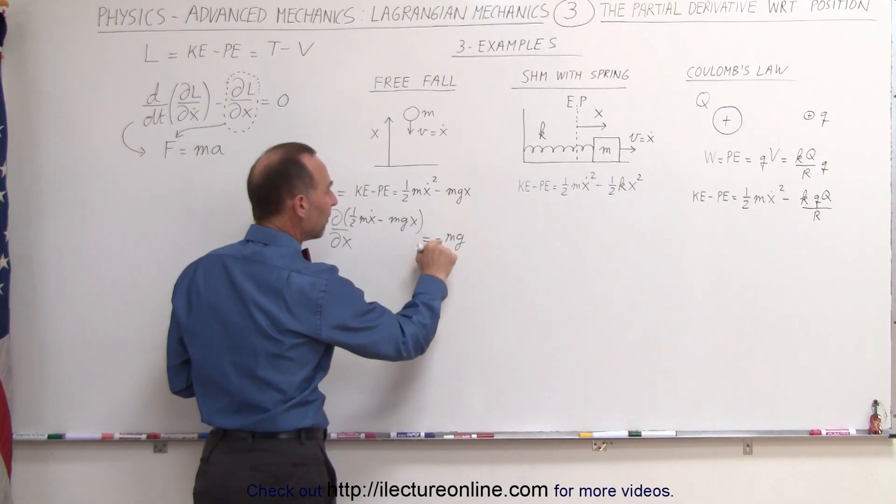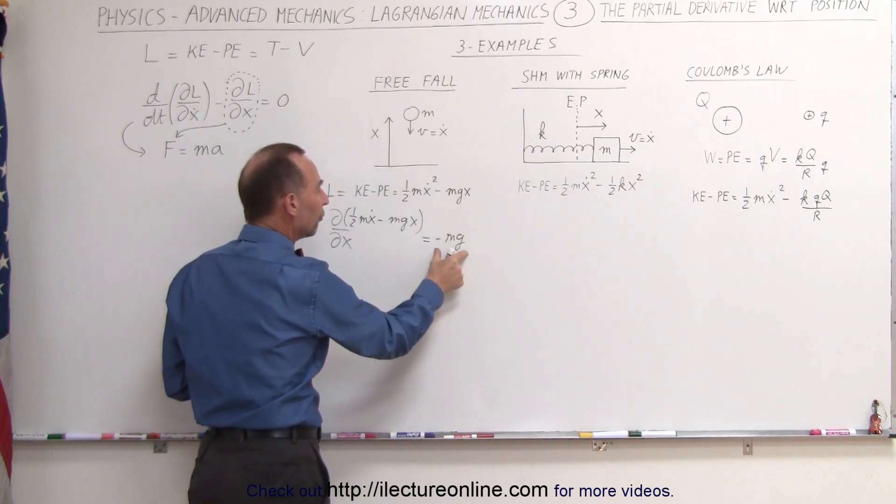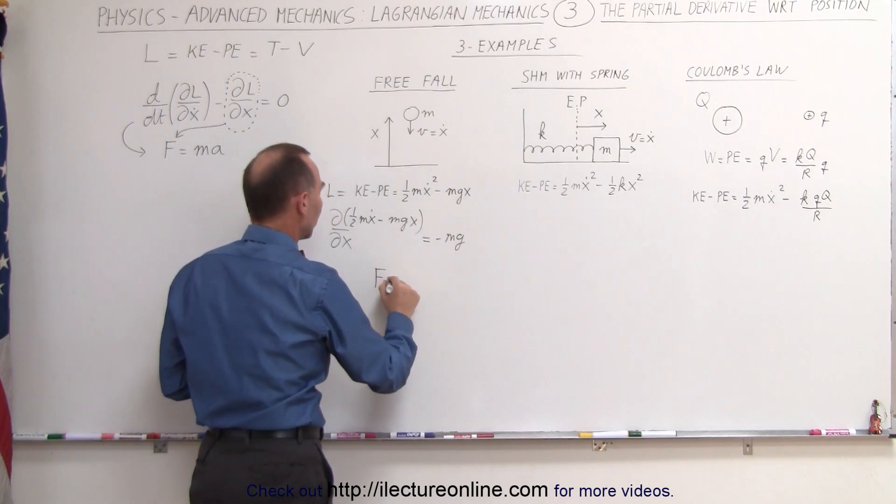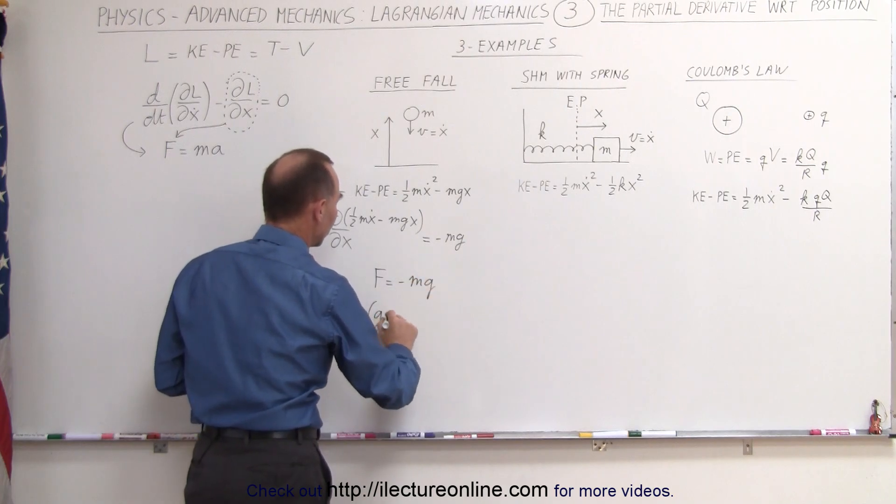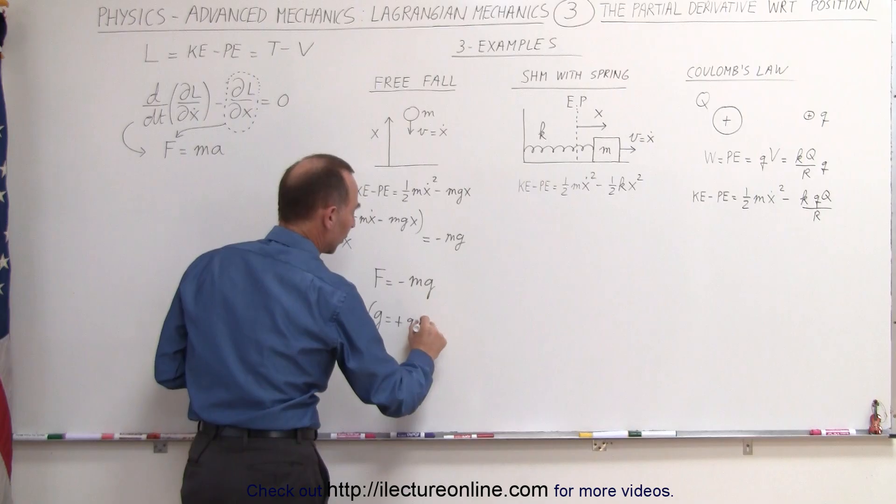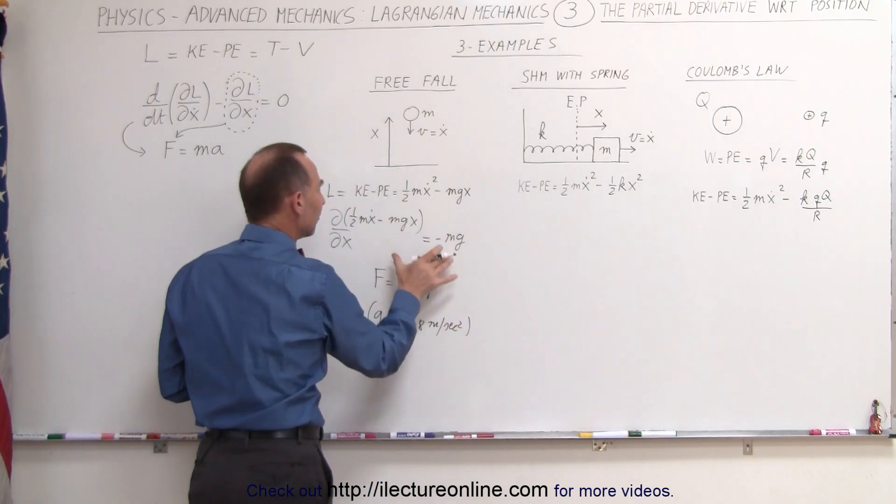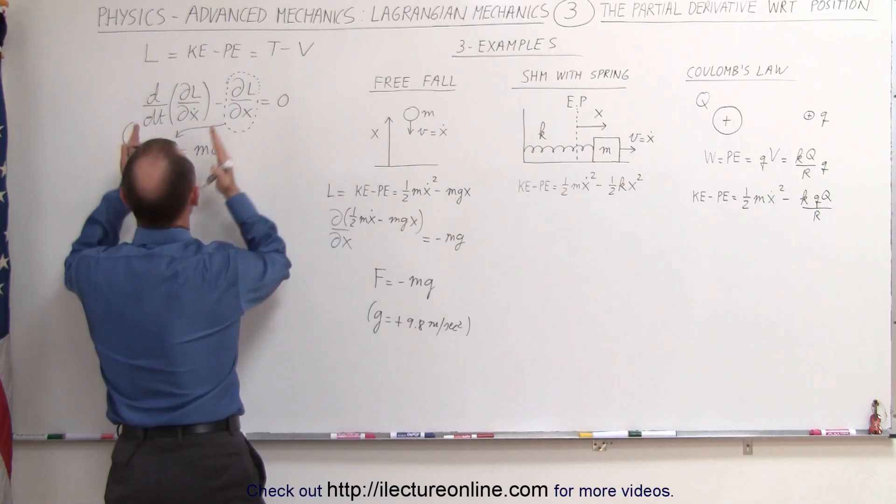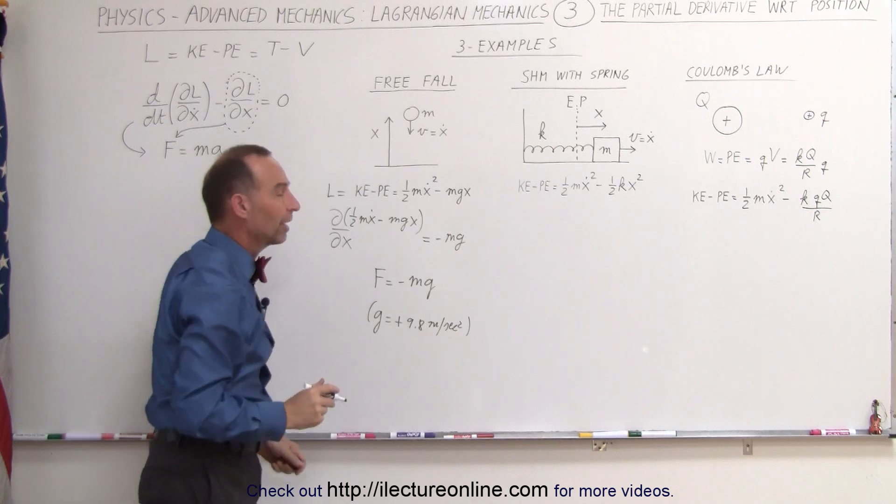this is equal to minus mg. Since mg is the weight, minus meaning that it's pointing downward, this would then be equal to the force. So we can say that the force is equal to minus mg, realizing that g is equal to a positive 9.8 meters per second squared. So again, you can see that in free fall, this term right here in this equation represents the force in the f equals ma equivalent of this representation.